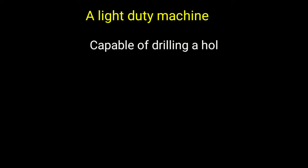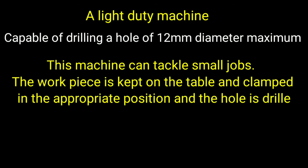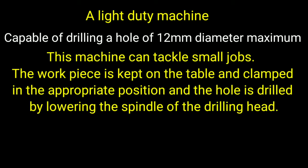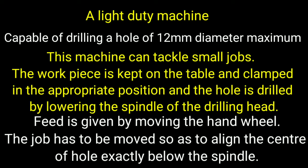A sensitive drilling machine is capable of drilling a hole of 12 millimeters diameter maximum, and its spindle speeds are correspondingly high. This machine can tackle small jobs. The workpiece is kept on the table and clamped in the appropriate position, and the hole is drilled by lowering the spindle of the drilling head. Feed is given by moving the hand wheel gently, which lowers the spindle and the hole is drilled up to the required depth. The job has to be moved so as to align the center of the hole exactly below the spindle.